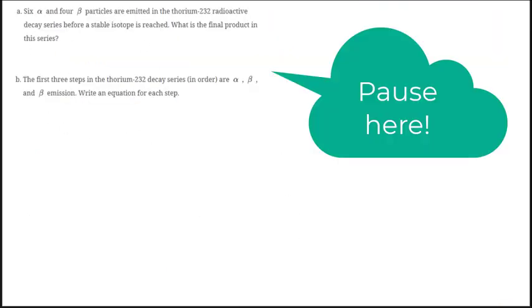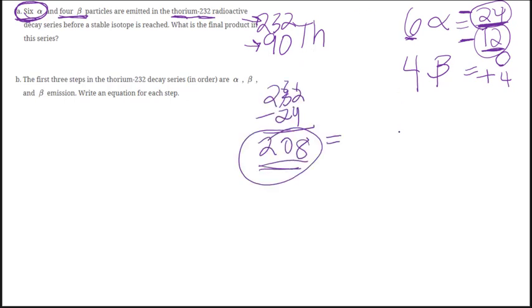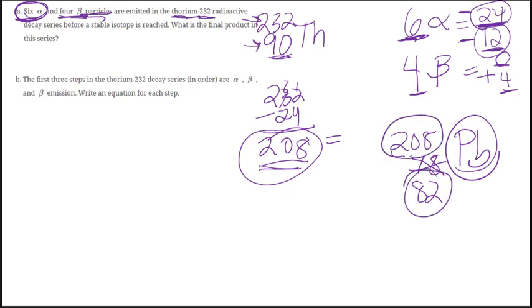Pause the video here to try to answer these two questions. We started with thorium-232, atomic number 90. With 6 alpha decays: 6 times 4 is a mass difference of 24, and 6 times 2 is 12 atomic number difference. So 232 minus 24 gives a final product mass of 208, and 90 minus 12 is 78. That's from the 6 alphas. Then with 4 beta particles — each beta does not change the mass but increases the atomic number by 1 — so 78 plus 4 gives an atomic number of 82. Atomic number 82 is Pb (lead). So the final product would be Pb with atomic number 82 and mass 208.